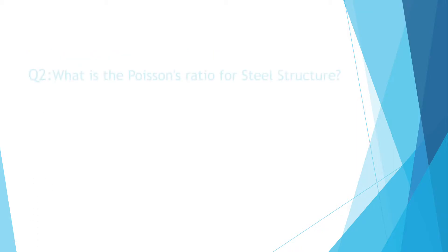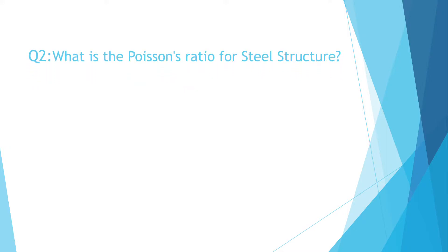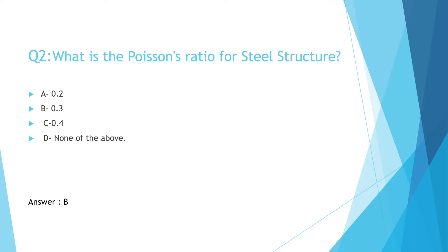Question 2: What is Poisson's Ratio for Steel Structure? A. 0.2, B. 0.3, C. 0.4, D. None of the above. The correct answer is B: 0.3.